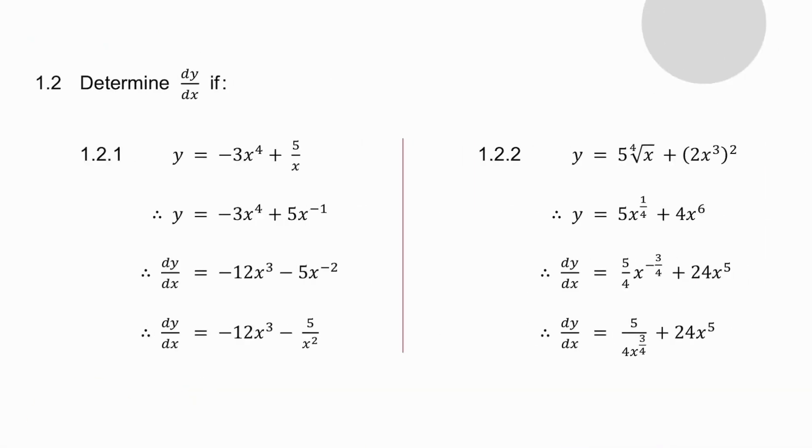In example 1.2.1, the first thing I do is write 5 over x as 5x to the minus 1. I then take the derivative of each term and then I sort out the negative exponent.